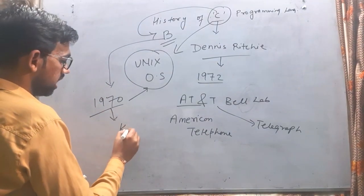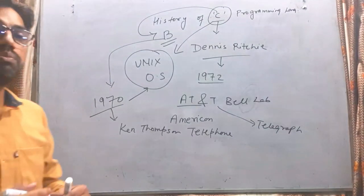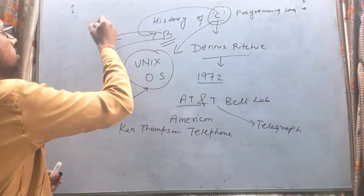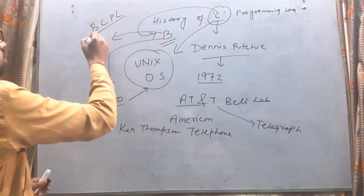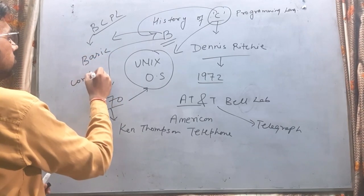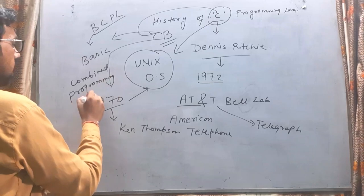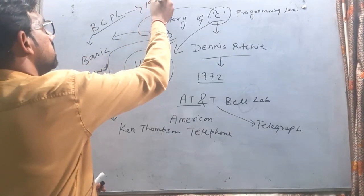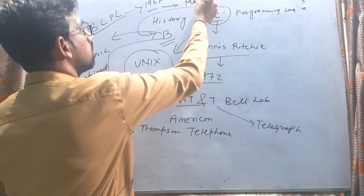B programming language को बनाने वाले थे Ken Thompson। अब बच्चे कहेंगे सर, B से पहले A भी होगा — ऐसा बिल्कुल नहीं है। B का नाम आया है BCPL से। BCPL की full form है Basic Combined Programming Language। यह 1967 में बनाई गई और इसके developer थे Martin Richards। तो C से पहले B थी और B से पहले BCPL थी।